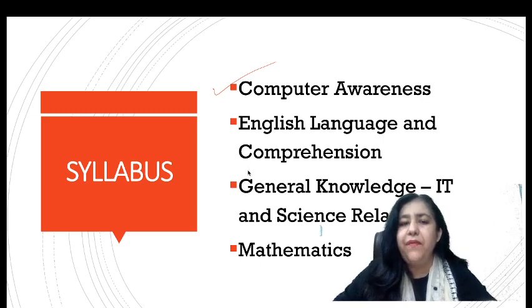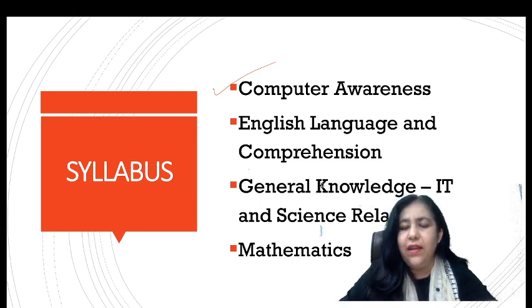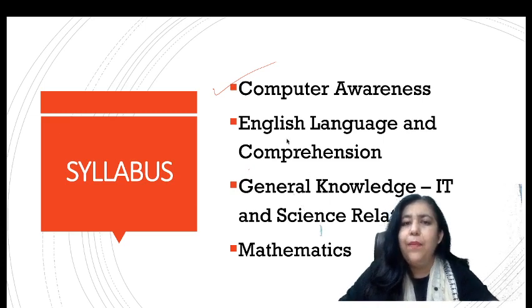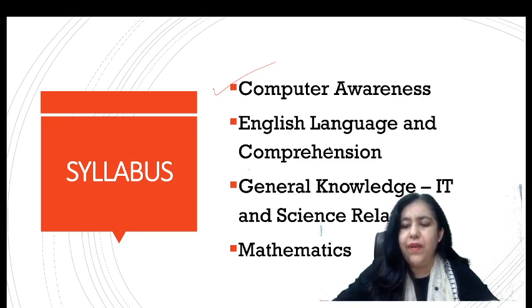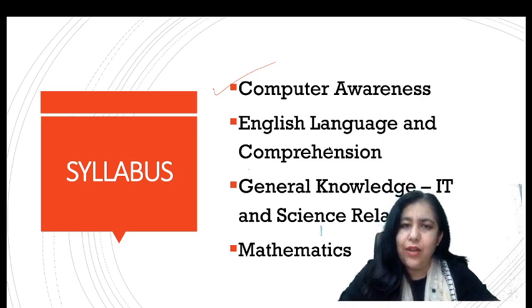You will also have 25% general knowledge with IT and science related questions — things related to new inventions and new technologies, so you should stay updated. Then 15% is English language and comprehension — quite straightforward. A paragraph will be given and you answer questions on it. So these four sections are what you have to prepare for.